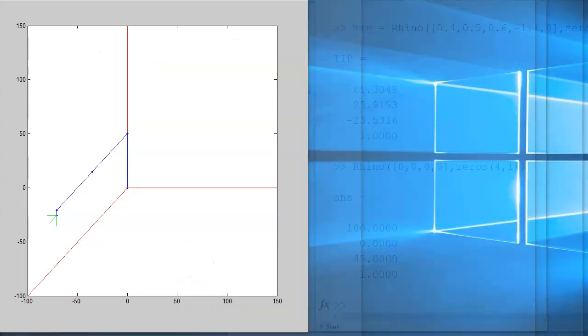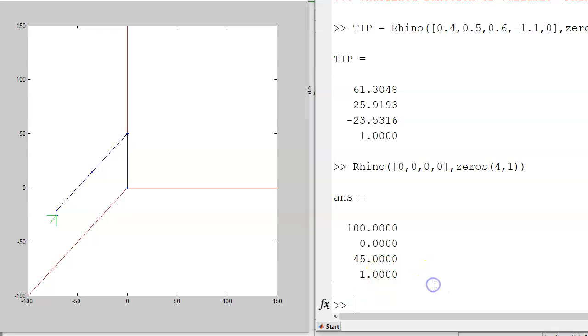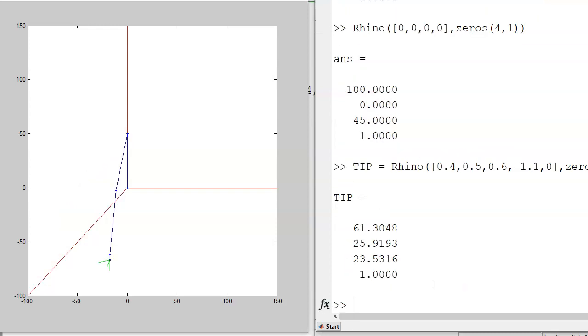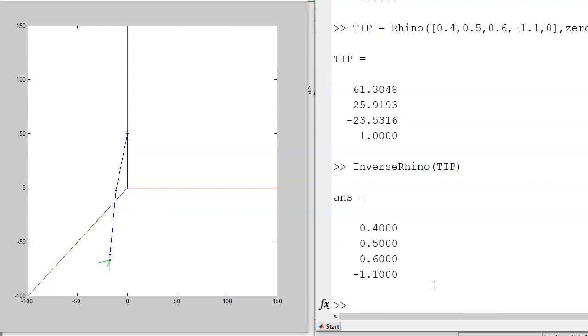Now to check on that to see if this is working, I can type in a point saying if the angles are 0.4, 0.5, 0.6, and theta 4 is minus theta 2 plus theta 3. Here's the tip position. If I take the inverse kinematics, I should get the same answer, 0.4, 0.5, 0.6. So that's working.